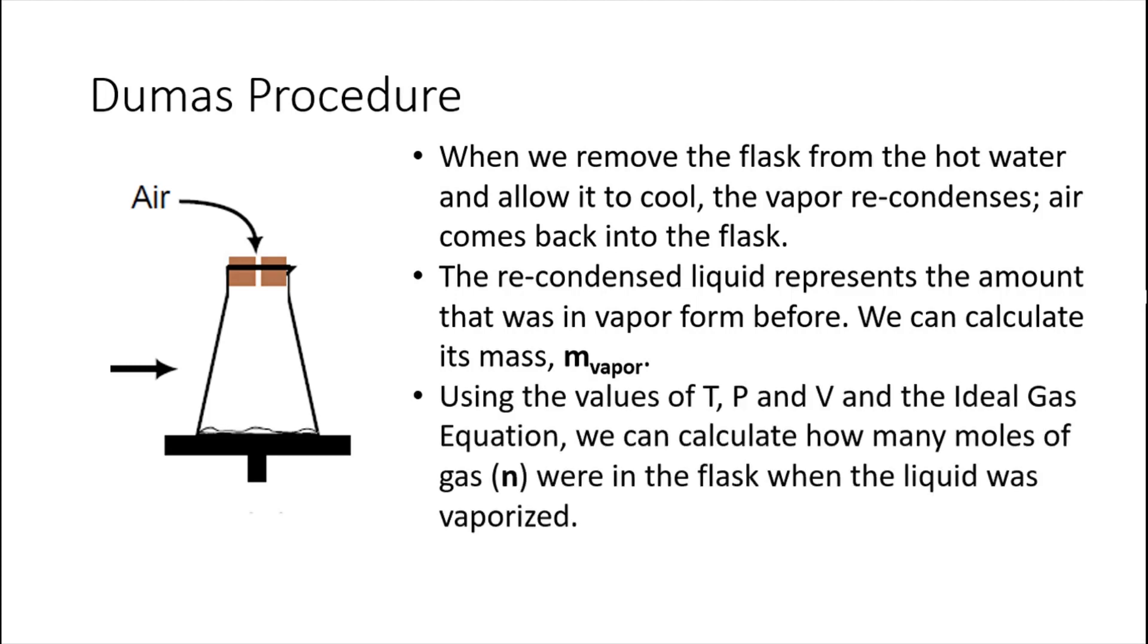We have the values of temperature, pressure, and volume of the vapor. We can use the ideal gas equation to calculate how many moles of gas were in the flask when the liquid was vaporized. And since that same amount of vapor is now recondensed and we have the mass, we can calculate the molar mass by dividing the mass of the vapor by the number of moles.